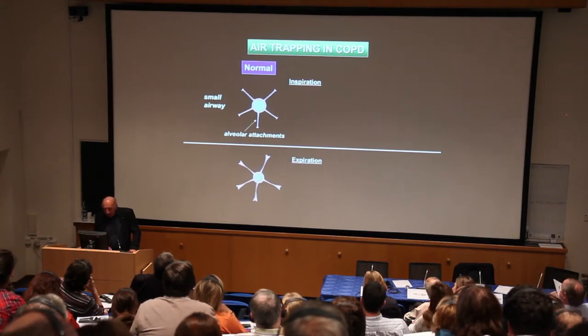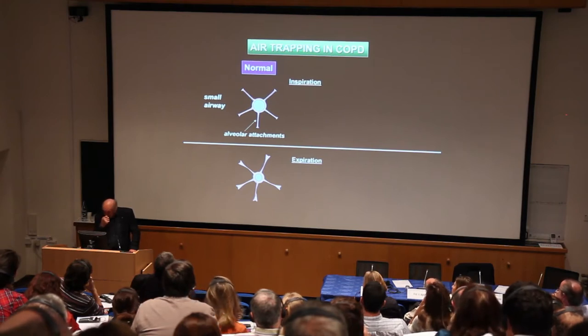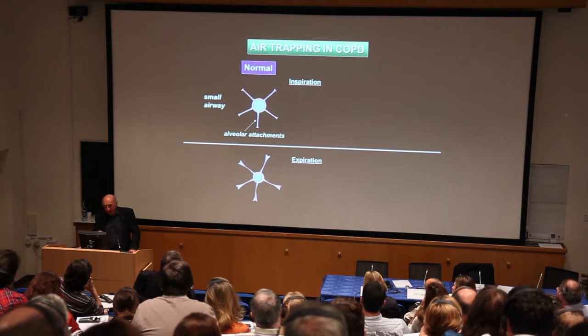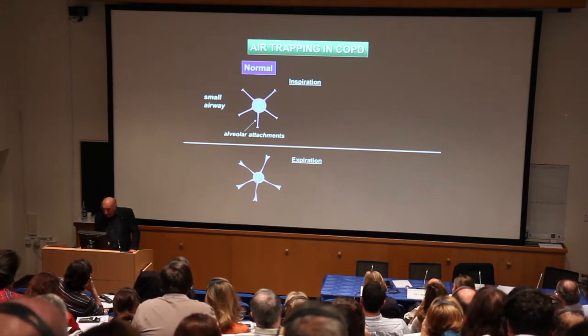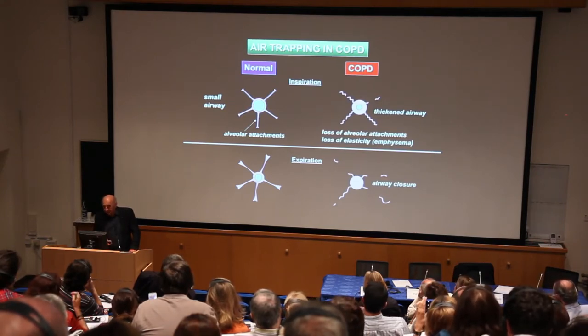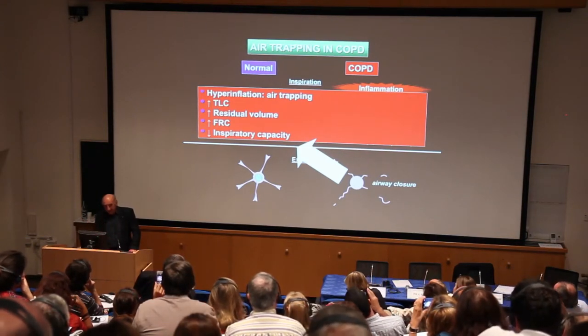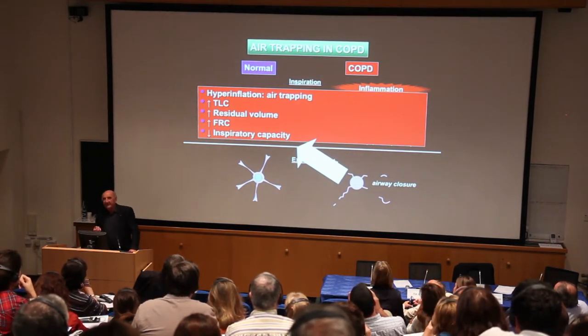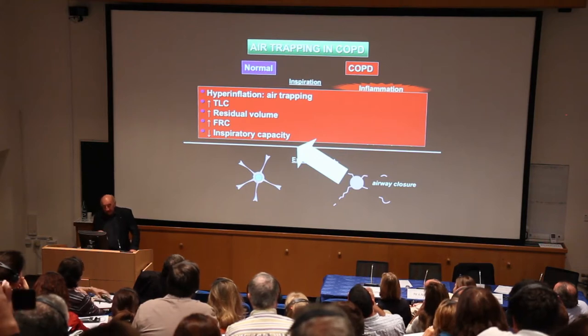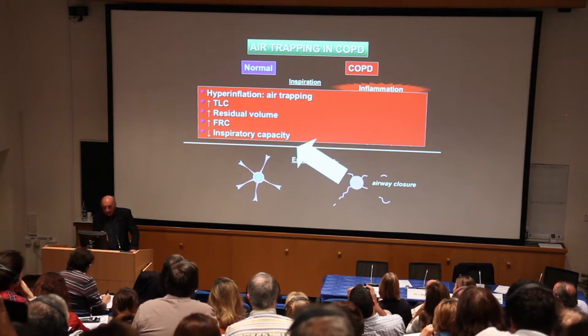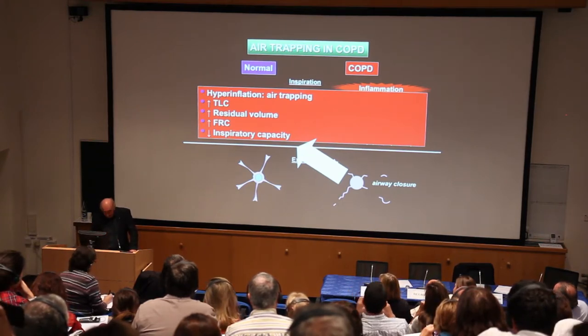When normal people breathe out, the airways tend to narrow, but they're prevented from closing by the alveolar attachments that contain elastin fibers. Whereas when COPD patients breathe out, because inflammation has led to these pathological changes, on expiration this narrowing of the airway is exaggerated and can lead to closure. This means that air is trapped in the alveoli. This is hyperinflation, a characteristic physiological finding in COPD reflected in increased lung volumes, particularly functional residual capacity, which is the resting lung volume.